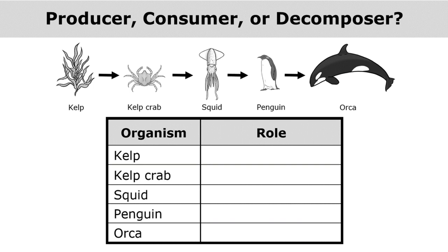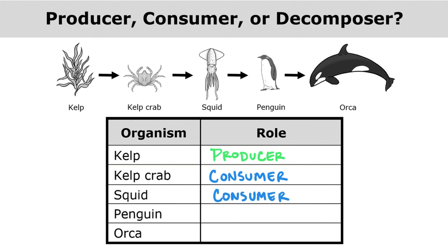Food chains always start with a producer, and kelp is our producer. The kelp crab is consuming the kelp, so the kelp crab is a consumer. The kelp crab itself is consumed by the squid, so the squid is also a consumer.